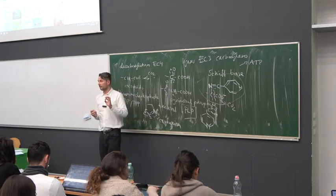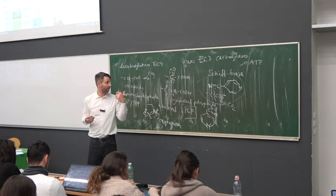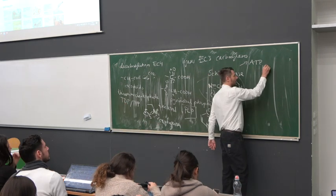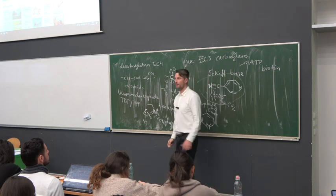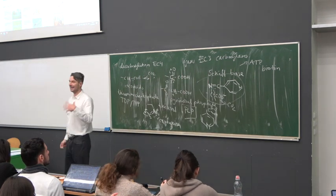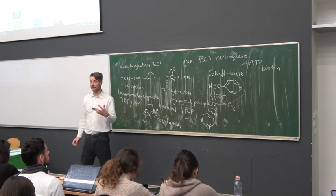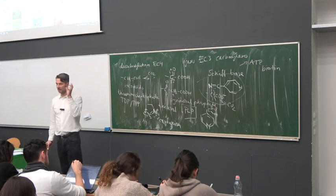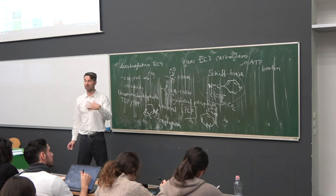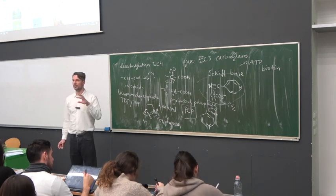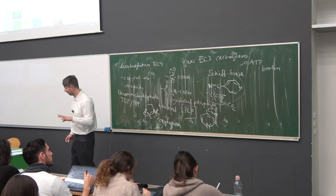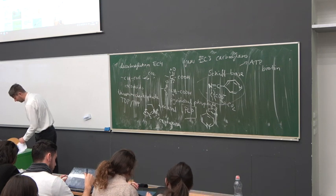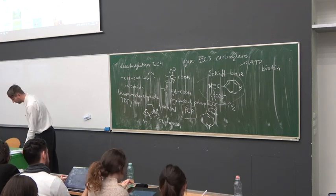A very common coenzyme of carboxylases is biotin. Most carboxylases — enzymes that add carboxyl groups — will contain biotin as a coenzyme. Not all of them do, but most of them do. So you can easily connect: if there's carboxylation, there's probably going to be biotin. It's not 100% but it's pretty common. Carboxylases are a distinct class of enzymes from decarboxylases.